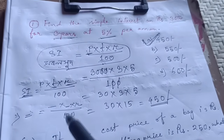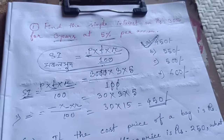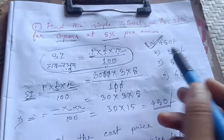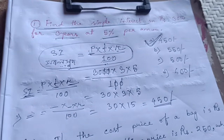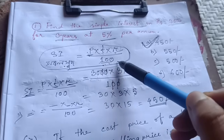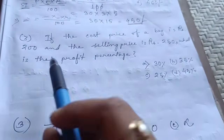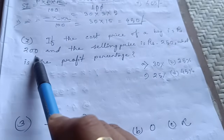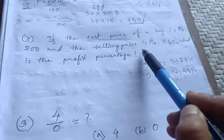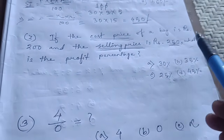If you want to find simple interest, you can find it using the formula. If the cost price of a bag is Rs. 200 and the selling price is Rs. 250, what is the profit percentage?